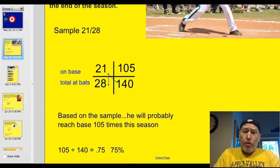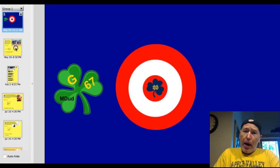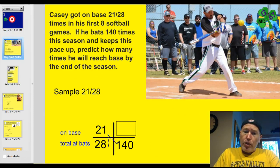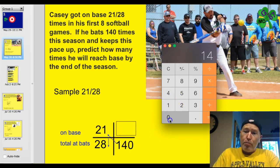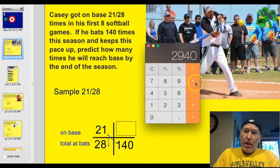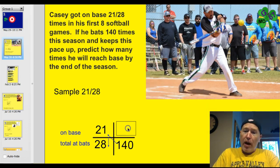Let me review how you use the proportion box for those watching this video for the first time. When you use the box, you multiply two numbers diagonally. I'll do 21 multiplied by 140 — that gives you a product. Then divide that by the third number, 28. It doesn't matter which diagonal you use as long as you multiply diagonally and divide by the other number, and you get 105. That gives you two equal fractions.